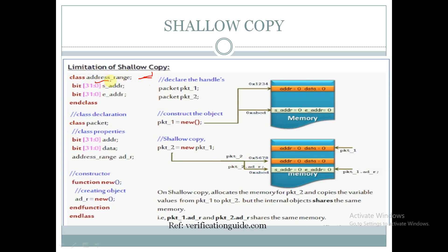Let us take a class called address_range. It has two properties called s_address and e_address of 32-bit size, and these are of bit data type. We are also declaring another class called packet, which has two properties called address and data of 32-bit data type, and a handle to address_range class called ad_r. ad_r is the handle for the class address_range and we are creating an object for this handle.